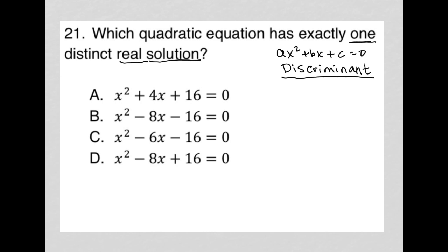The discriminant is b² - 4ac. If b² - 4ac is greater than zero, you will have two real, two distinct real solutions.